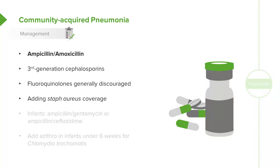If a patient has a complicated pneumonia marked by a very sick appearance or an abscess in their lung, we'll probably add Staph aureus coverage. This can be done by adding clindamycin, or adding vancomycin in a very sick patient.